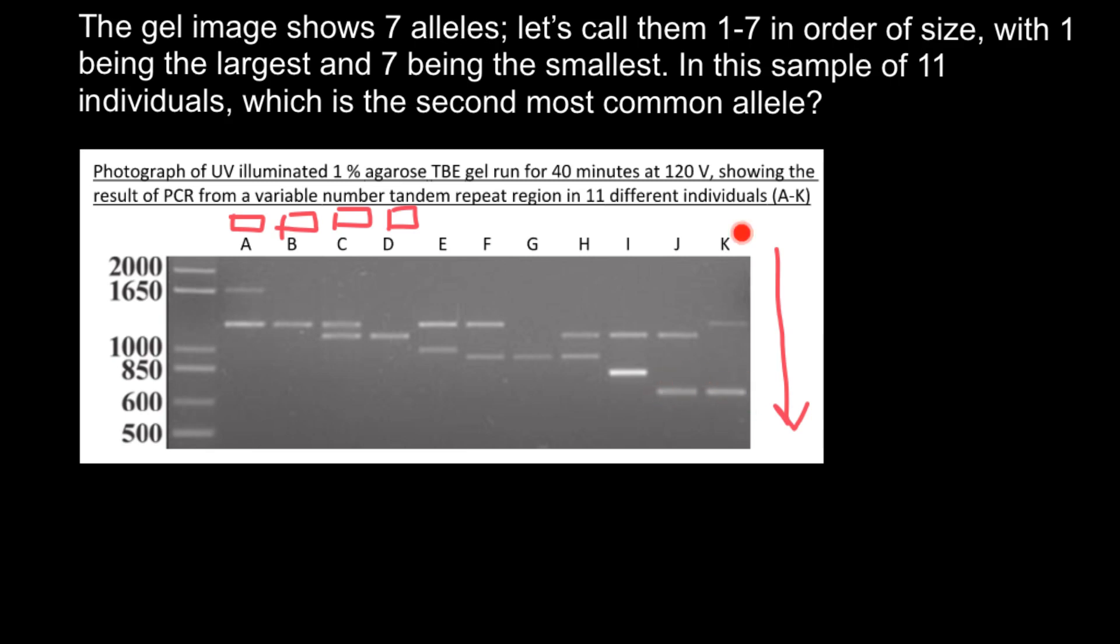All these alleles would have the same size if they travel the same distance. For example, this couple of alleles from person K and J have the same size. They travel the same distance and the size is about 600 base pairs. So this ladder we load here shows different variants of DNA sizes.